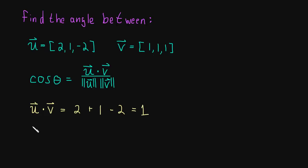The dot product is 1, let's do the length of u now and the length of v. The length of u is equal to the square root of 2 squared plus 1 squared plus negative 2 squared.